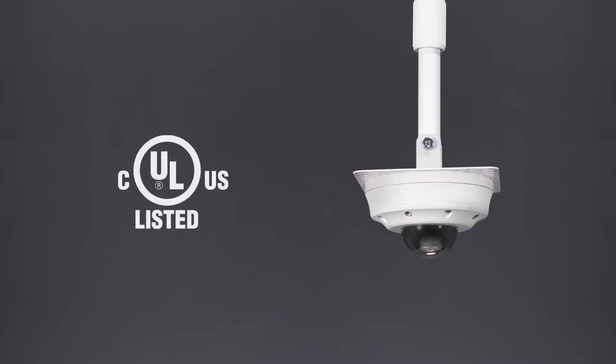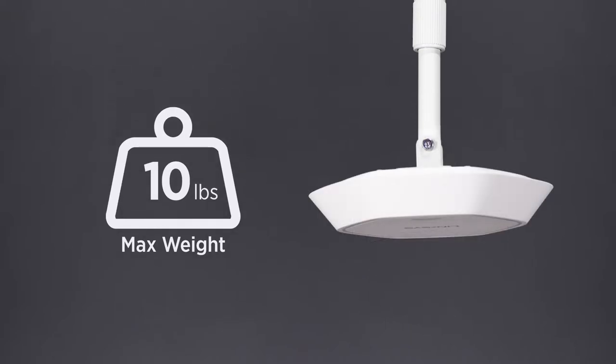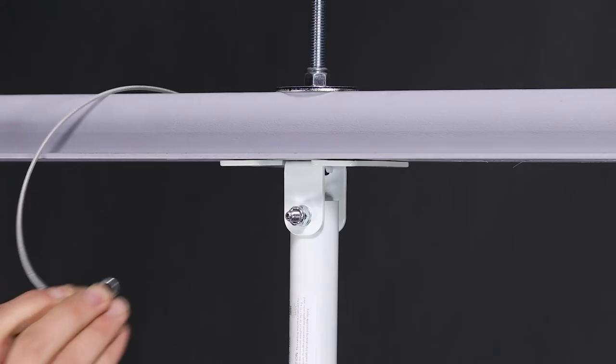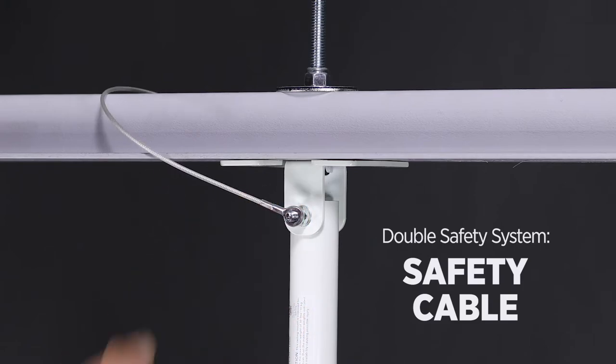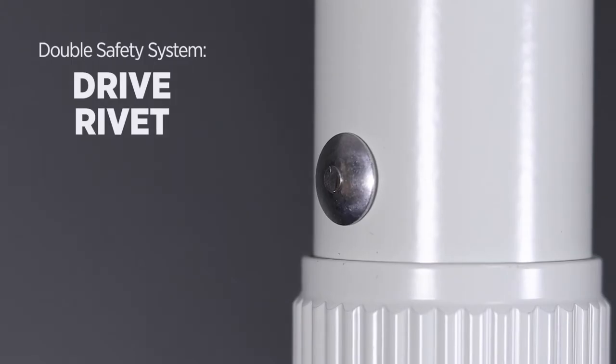Designed with safety in mind, CP poles are UL listed and rated for cameras or other devices weighing up to 10 pounds. Each pole includes an aircraft grade stainless steel safety cable and a drive rivet that acts as an added fail safe.